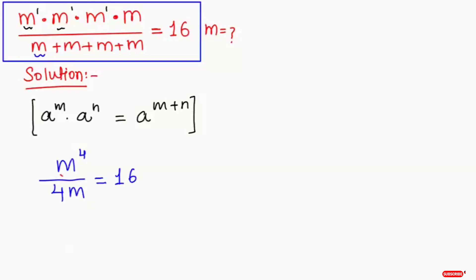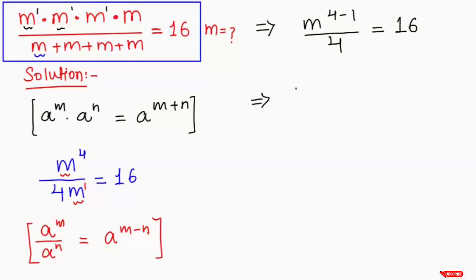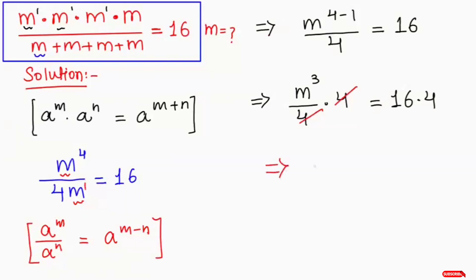Now we have the same term in the numerator and denominator. I'm going to apply the exponential rule: a to the power of m over a to the power of n can be written as a to the power of m minus n. So m to the power of 4 minus 1 over 4 equals 16. Since 4 is dividing, it moves to multiply the other side, giving us m cubed over 4 times 4 equals 16 times 4. These cancel, so m cubed equals 64.